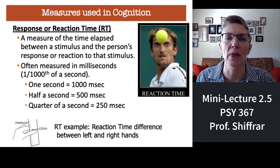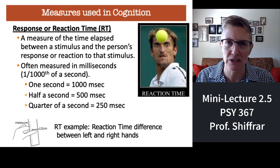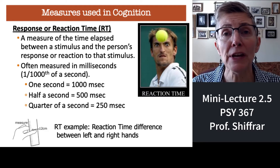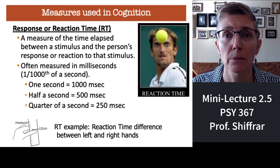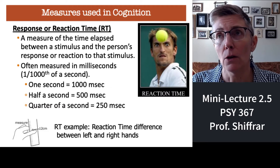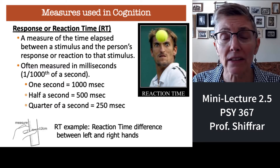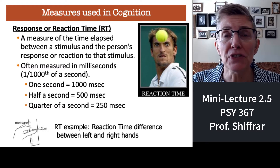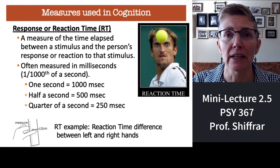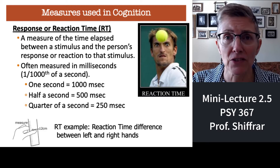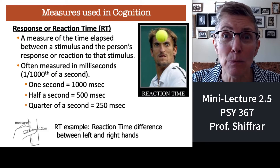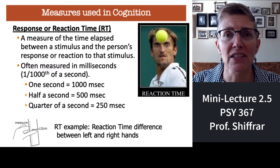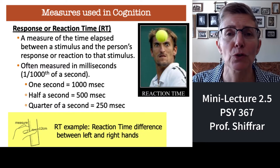Reaction time is often measured in milliseconds. A millisecond is one second cut into a thousand pieces — 'milli' just means a thousand. Our reaction times vary quite a bit: different people react more or less quickly to different stimuli, and the same person can react with slower or faster reaction times to the same stimulus.